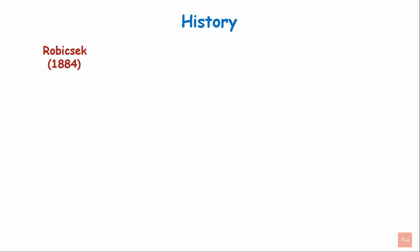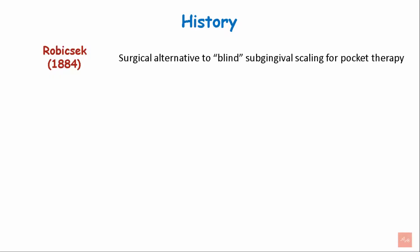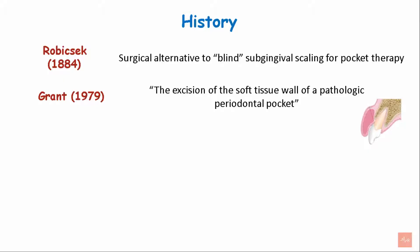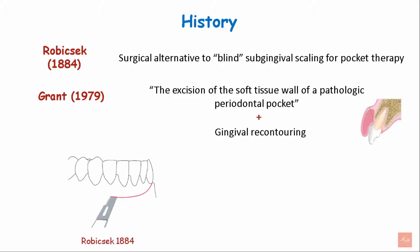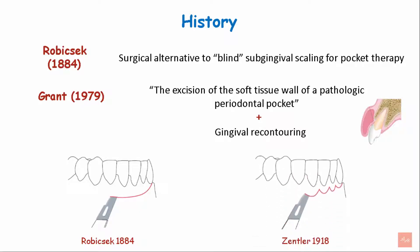Robisek in 1884 suggested that gingivectomy is a surgical alternative to blind subgingival scaling for pocket therapy. Grant in 1979 defined gingivectomy as the excision of the soft tissue wall of a pathologic periodontal pocket along with gingival recontouring. Robisek in 1884 introduced a continuous incision for the gingivectomy procedure, and Zentler in 1918 suggested the scalloped incision for gingivectomy.